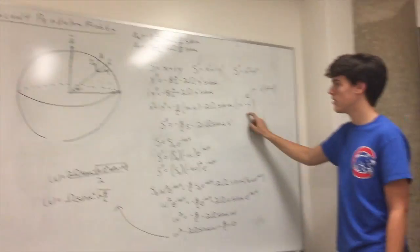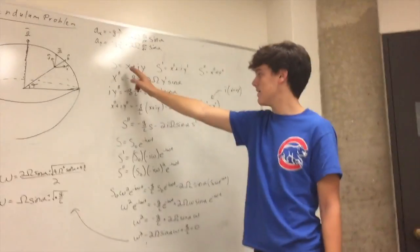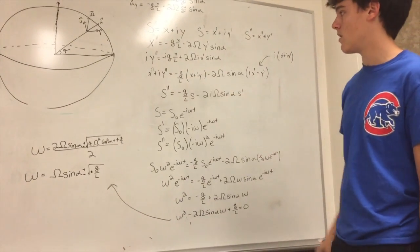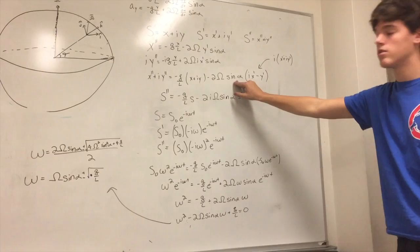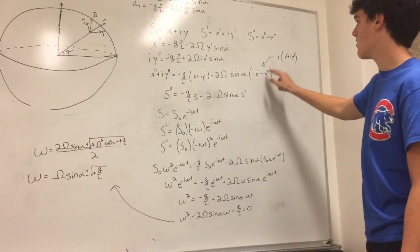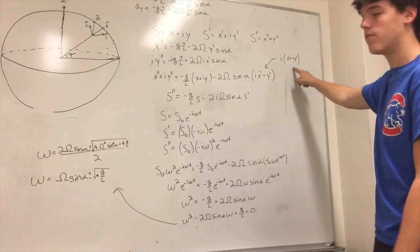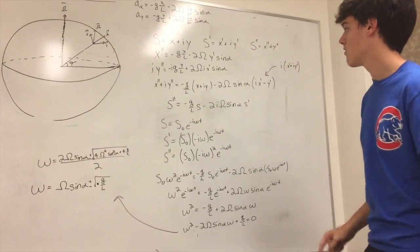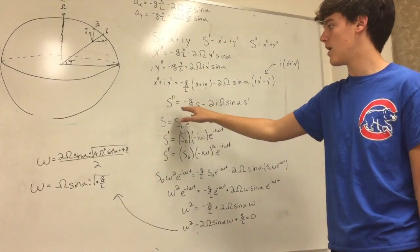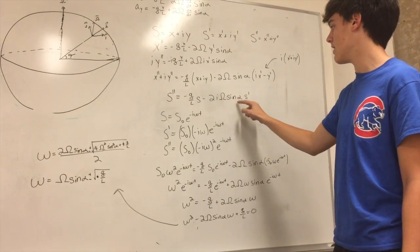When you add the equations together, you get the following combined equation, where we've already factored out x plus iy — that's our definition of s. In the first term it's simply negative g over l times s. For the Coriolis term, when you factor it, it's i times x prime minus y prime, but that value is the same as i times (x prime plus iy prime), which is i times s prime — the form we're looking for. Using these substitutions, we simplify to: s double prime equals negative g over l times s minus 2i omega sin(alpha) times s prime.